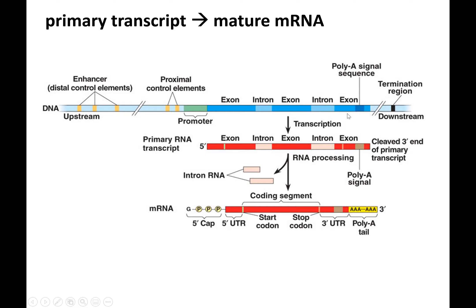So here's a summary of what we've talked about: you have a promoter and a terminator region, and you make RNA that has exons and introns. Those introns will get removed. A 5' cap and a 3' tail will be added. The rest — the other parts shown — will be covered in the translation lecture.